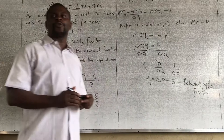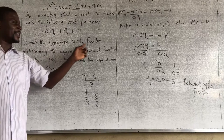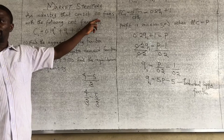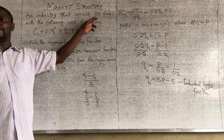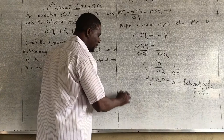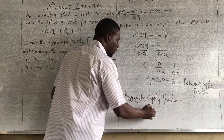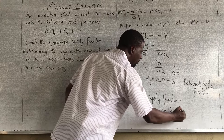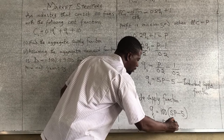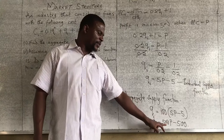This supply function is for one firm. But in the question, they asked us to find the aggregate supply function — that means the supply function for all 100 firms. Anytime they give you the number of firms, multiply it by the individual supply function. So, aggregate supply equals 100 times (5P minus 5), which gives 500P minus 500.